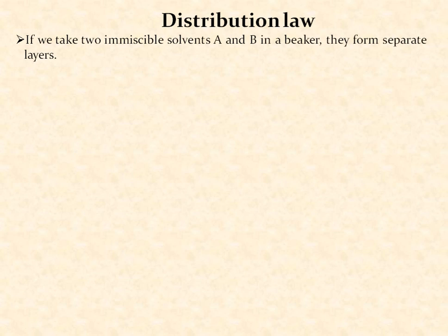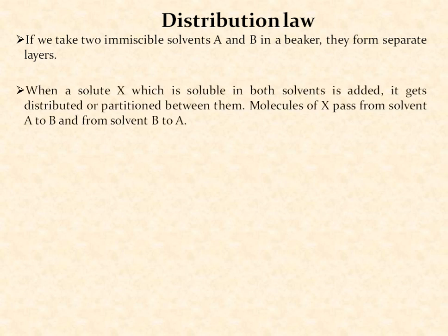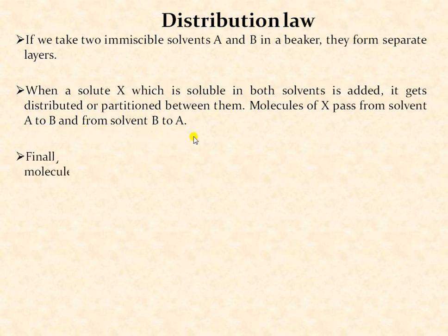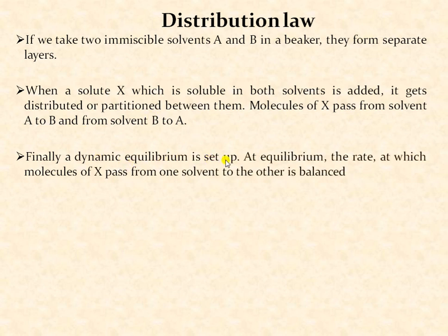If we take two immiscible solvents A and B in a beaker, they form separate layers because they are immiscible in nature. When a solute X, which is soluble in both solvents, is added, it gets distributed or partitioned between them. Molecules of X pass from solvent A to B and from solvent B to A. Finally, dynamic equilibrium is set, where the rate at which molecules of X pass from one solvent to another is balanced.